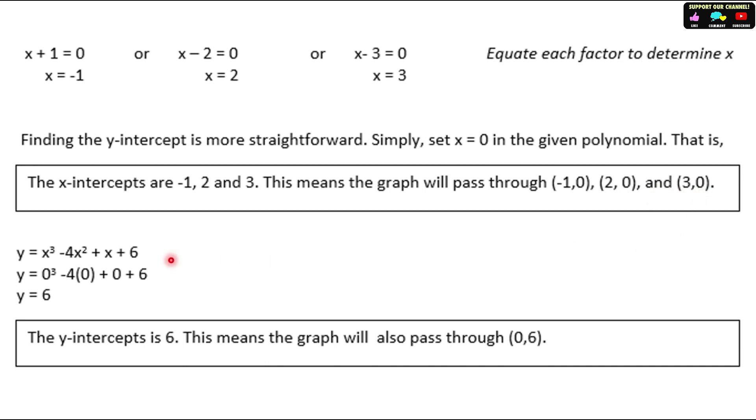The graph passes through the points (negative 1, 0), (2, 0), and (3, 0). The y-intercept is at 6.